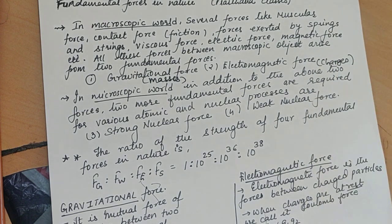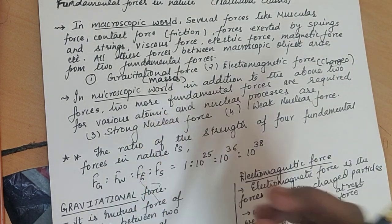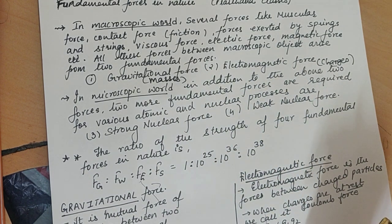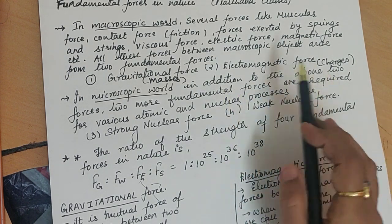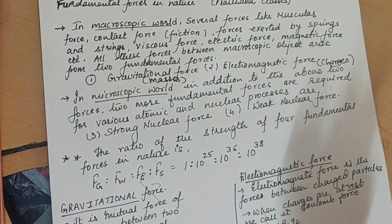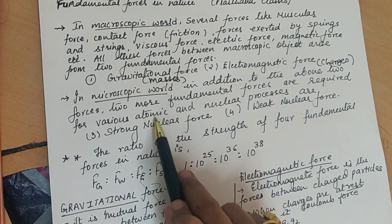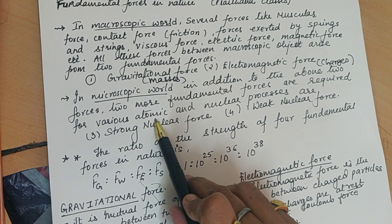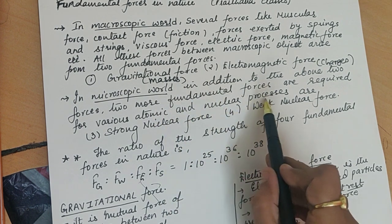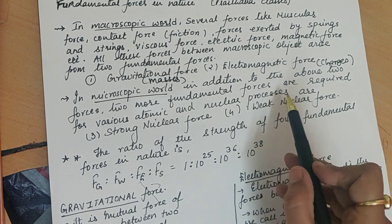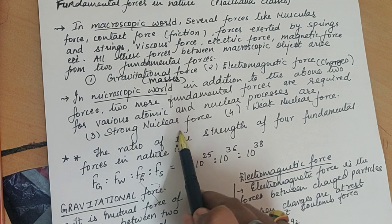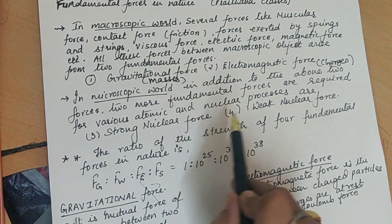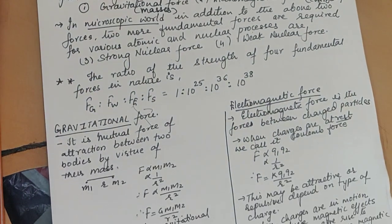In the microscopic world — at the scale of atoms or cells — in addition to gravitational and electromagnetic forces, there are two other fundamental forces that appear in atomic physics and nuclear physics. When we study atoms, protons, electrons, and nuclear reactions like fission and fusion, we encounter two more fundamental forces: the strong nuclear force and the weak nuclear force.